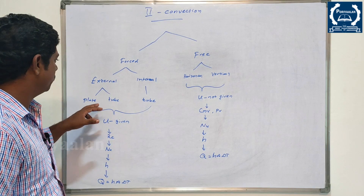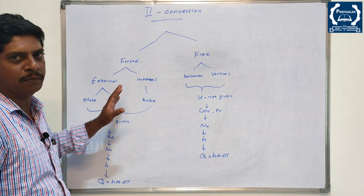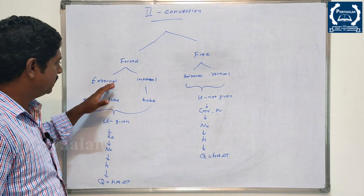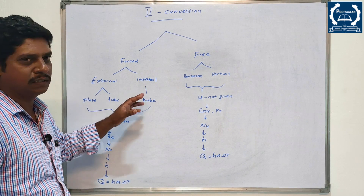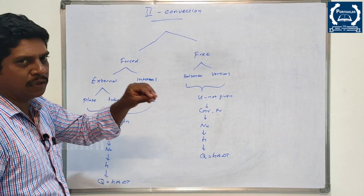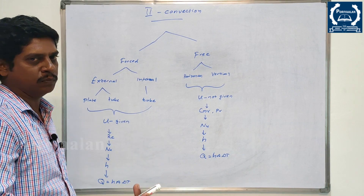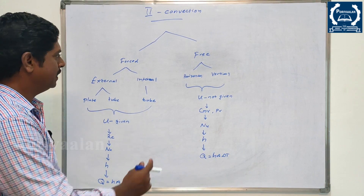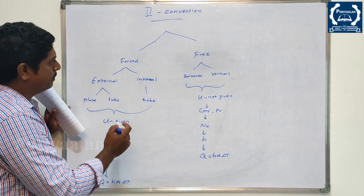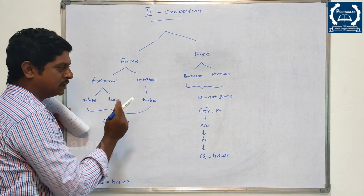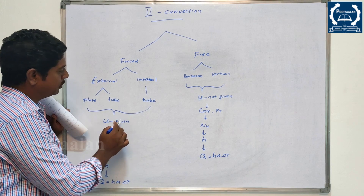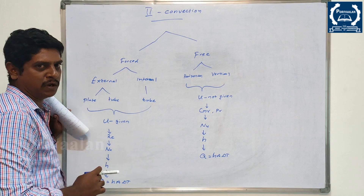For external flow, plate, tube, and slab are the key geometry types. Internal flow is only a tube — a circular tube. If there is fluid flow, the convection is like internal flow. For internal flow and external flow, if there is forced convection, we can see some velocity u.